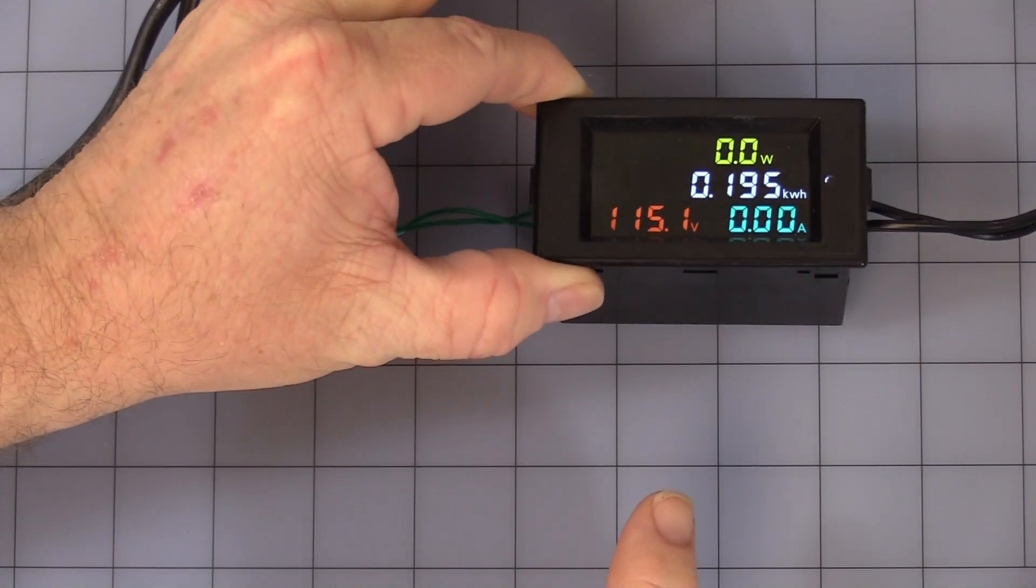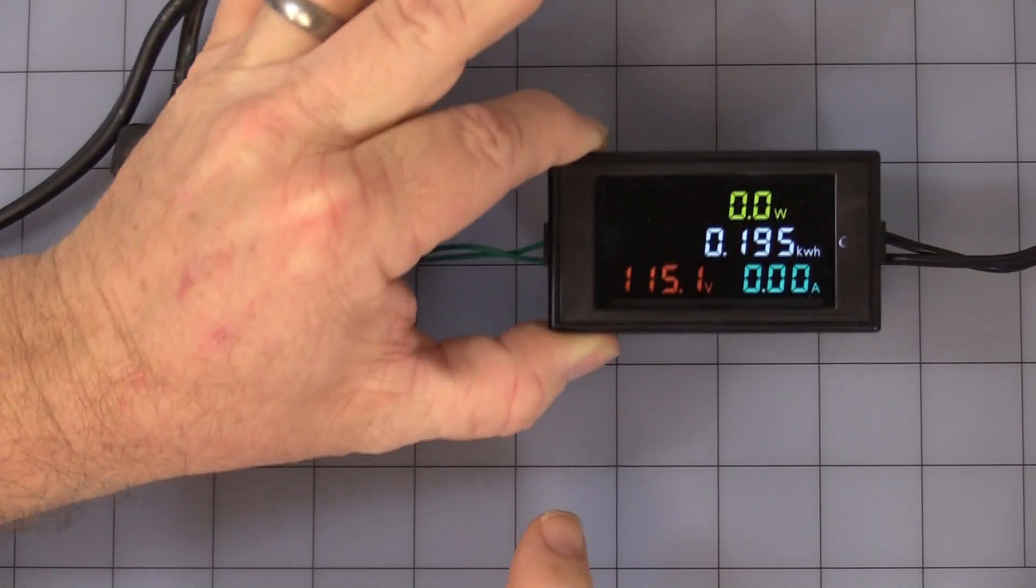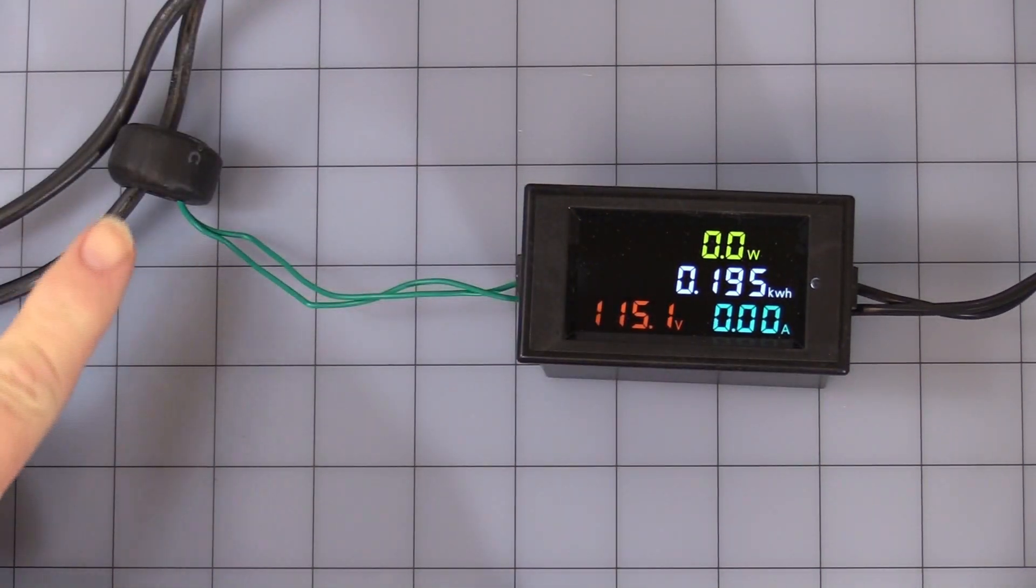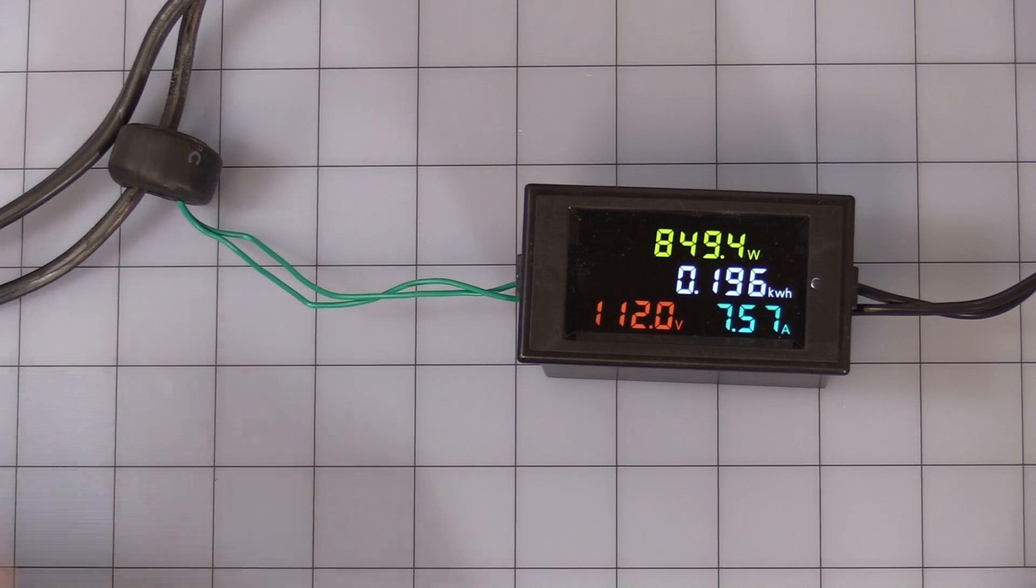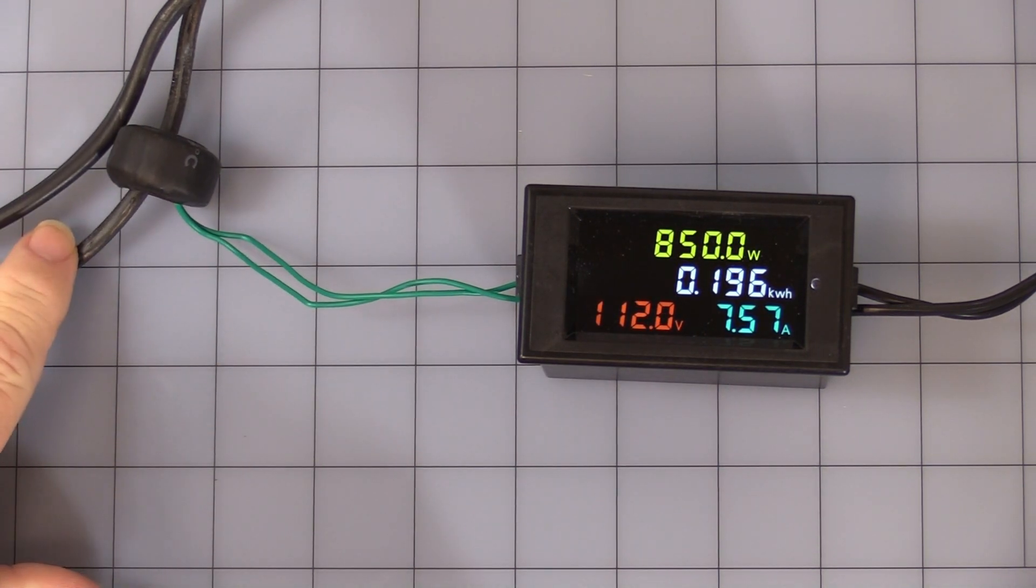But once you start to go a little high, a little low out of viewing angle, it does fade out. Now let me go ahead and turn on my load here. As you can see, instantly the amps jump to 7.5 amps.